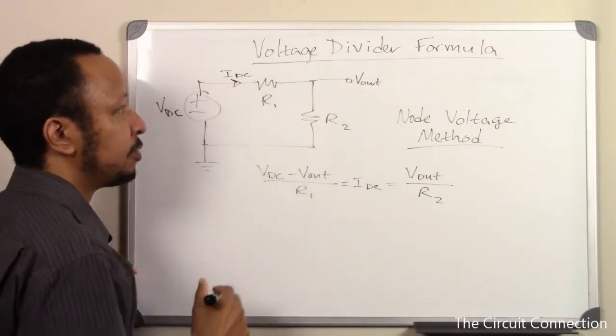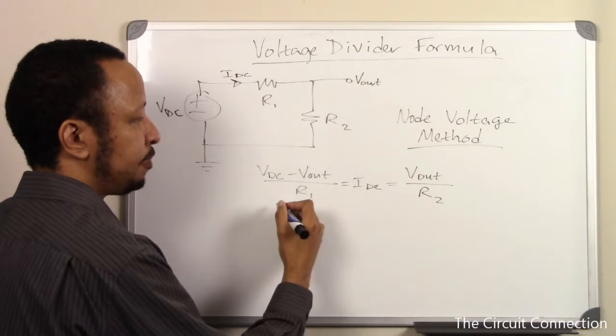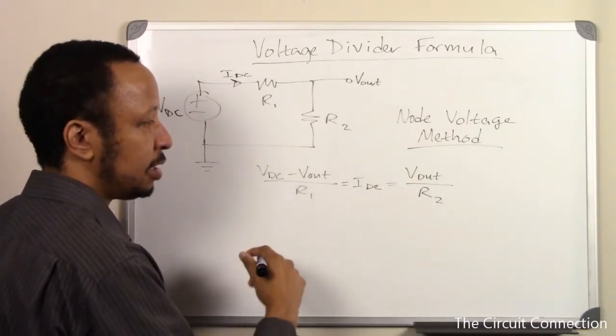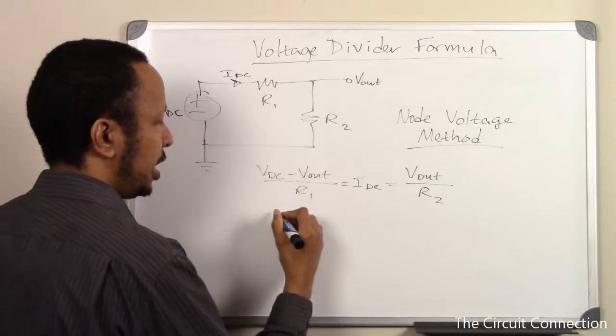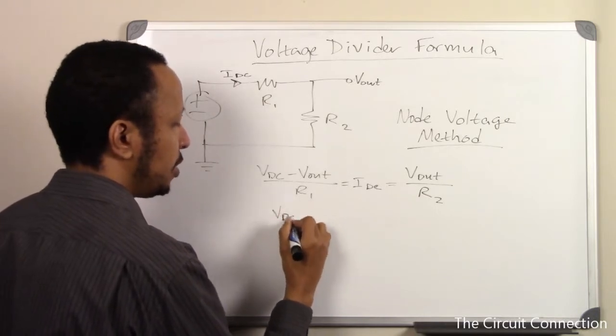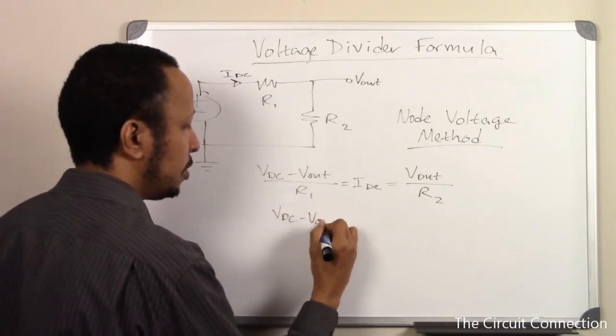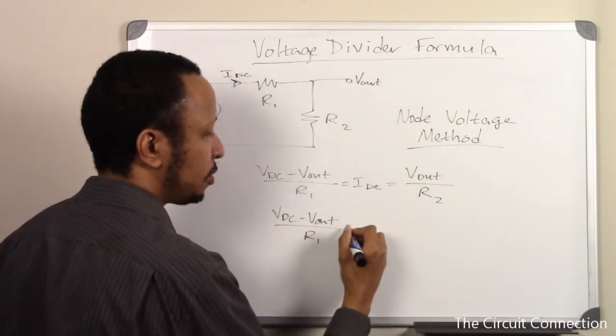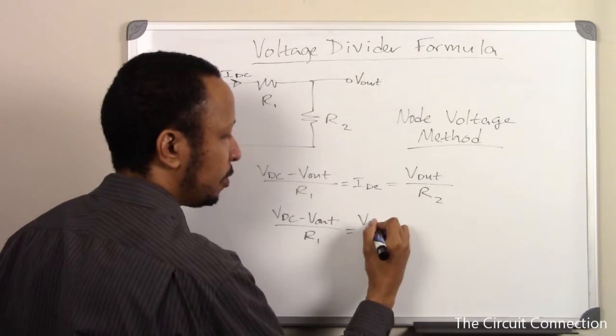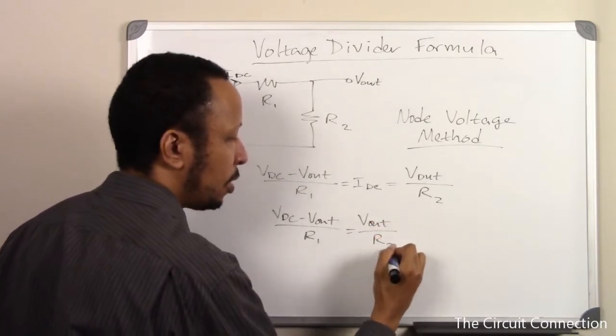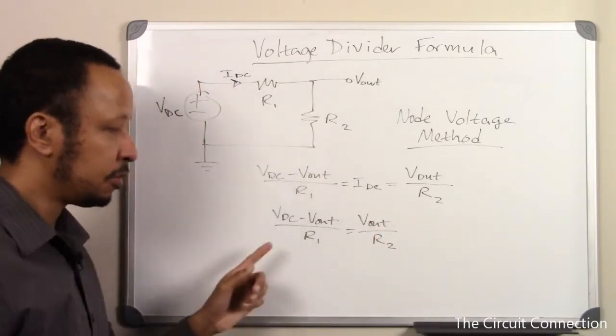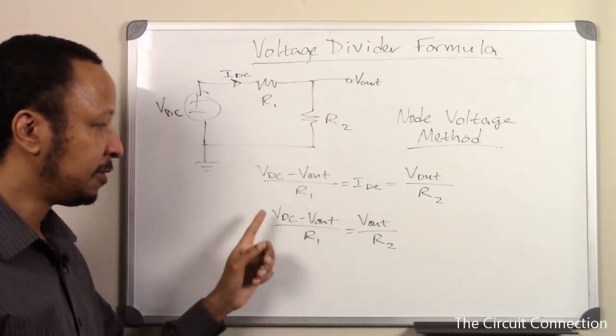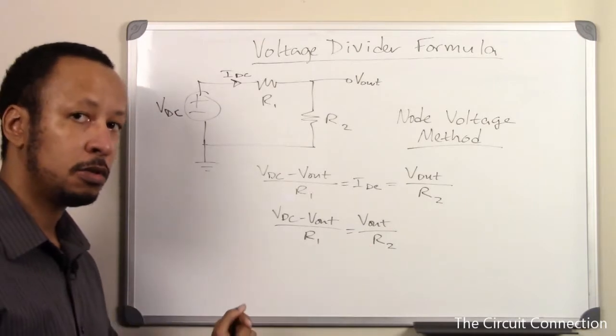So next what we'll do is since these are both equal, we'll just eliminate IDC and not include it anymore. Because ultimately it was a placeholder for what we're doing here. What we're trying to achieve is an expression for Vout in terms of VDC, R1 and R2.